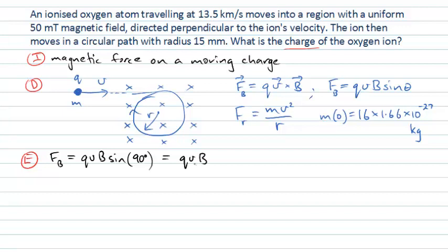So it's Q V B. And this magnetic force must be what is giving rise to the circular motion. It must be supplying the required centripetal force. So it must equal MV squared divided by R.